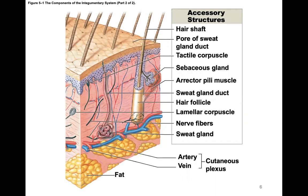Looking at some of the accessory structures we can find: hair, pores, various types of receptors such as tactile receptors which pick up pressure, nerve fibers, blood vessels, and so on.